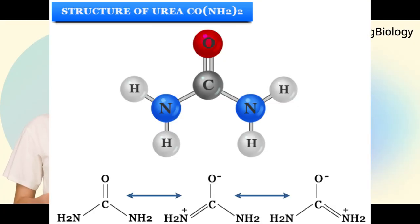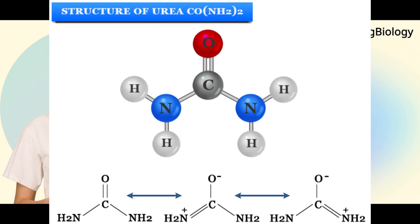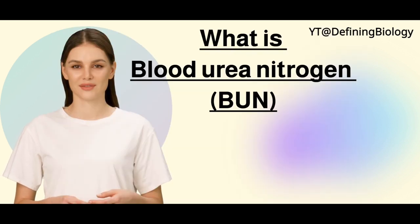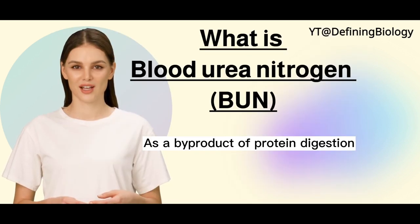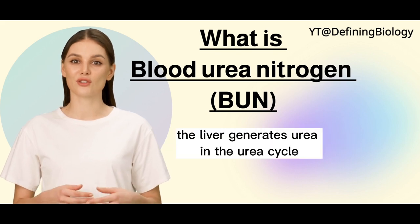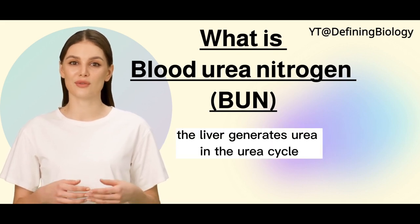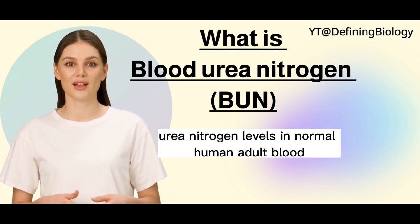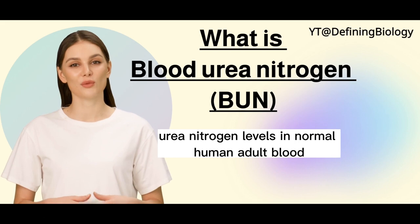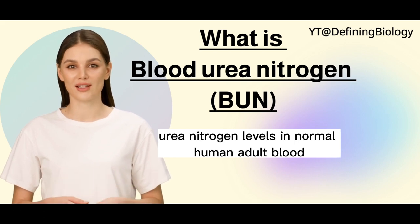Blood urea nitrogen (BUN) is a medical test that determines the quantity of urea nitrogen in the blood. As a byproduct of protein digestion, the liver generates urea in the urea cycle.